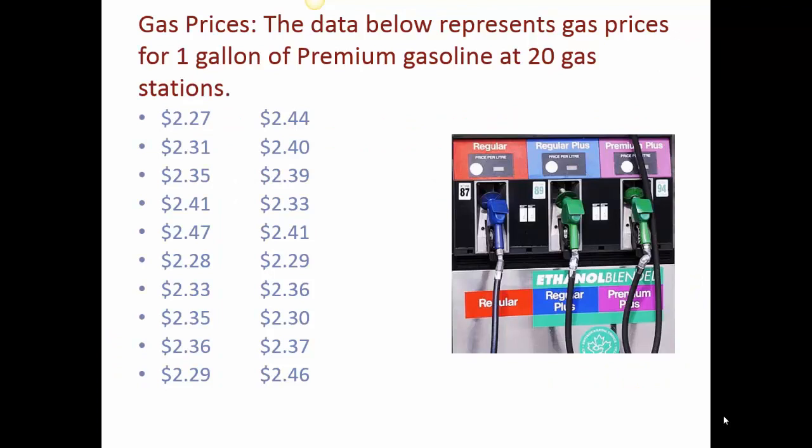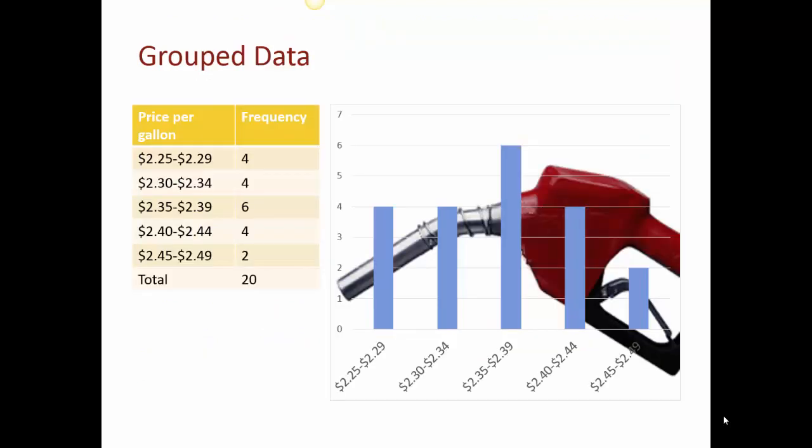So we're going to do another example. This one is the data below represents gas prices for one gallon of premium gasoline at 20 gas stations. So the first thing I see is the low looks like it's 227 and I don't have these necessarily in order. They're kind of scattered all around, but it does look like the first one's the lowest and the last one's the highest. So once again, I needed to group the data. So you can see here's how I started it. I started at 225 and I went up to 249. So my width is four for each of these. So 225 to 229, 230 to 234. You can see I keep going. And after I made up my class widths, I could go back and put their frequency in there.